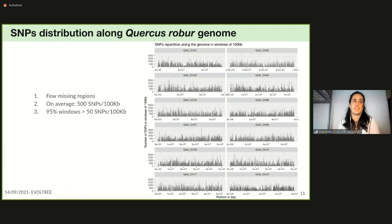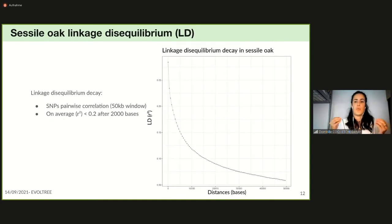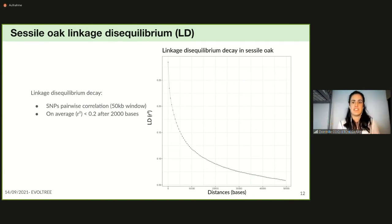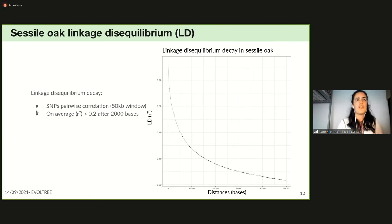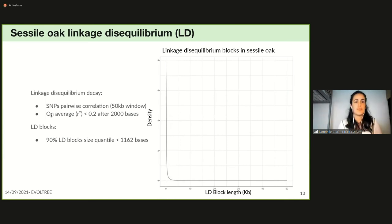Overall, 95% of windows contain at least 50 SNPs. We then estimated the distance over which linkage disequilibrium decays in our 72 individuals, performing pairwise SNP correlation within windows of 50 kb. We obtained on average an r-squared below 0.2, corresponding to no correlation after 2,000 bases. We also computed LD blocks and found that 90% of LD block sizes were below 1,162 bases.